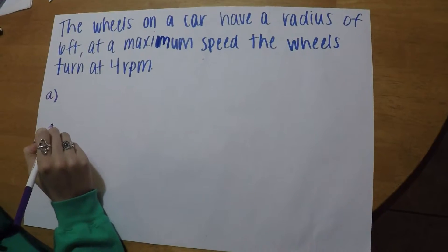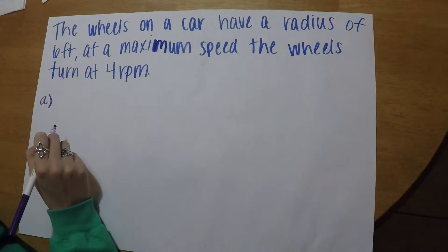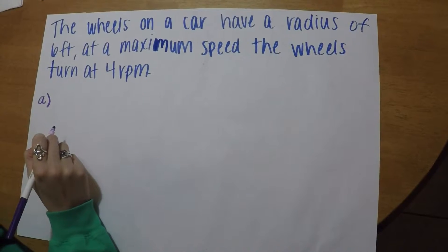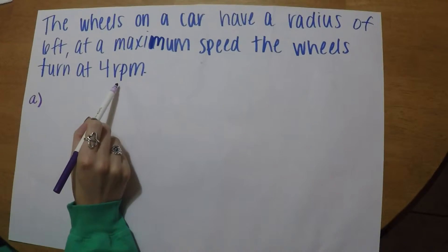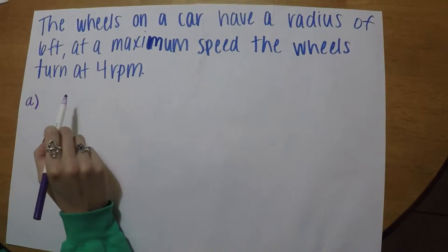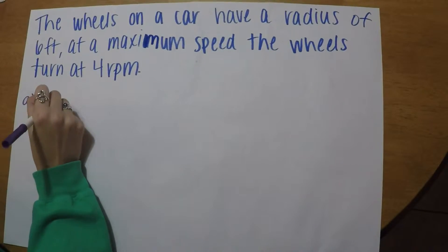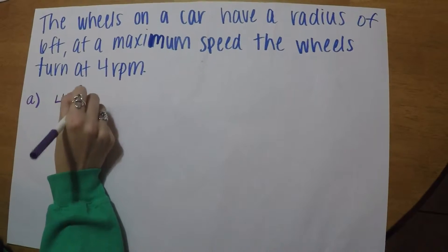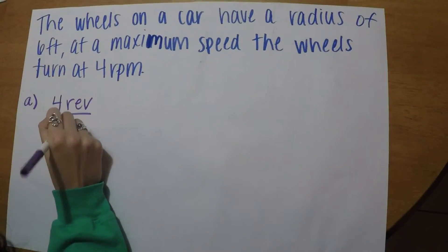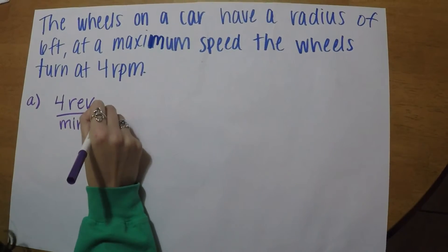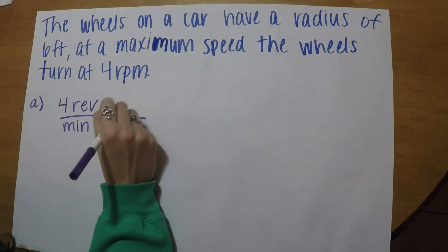First, we'll be solving for the angular velocity at the tip of the wheel and the center of the wheel. In order to get the angular velocity, we need to convert revolutions per minute into radians per minute. So first we take four revolutions per minute and multiply that by two pi.